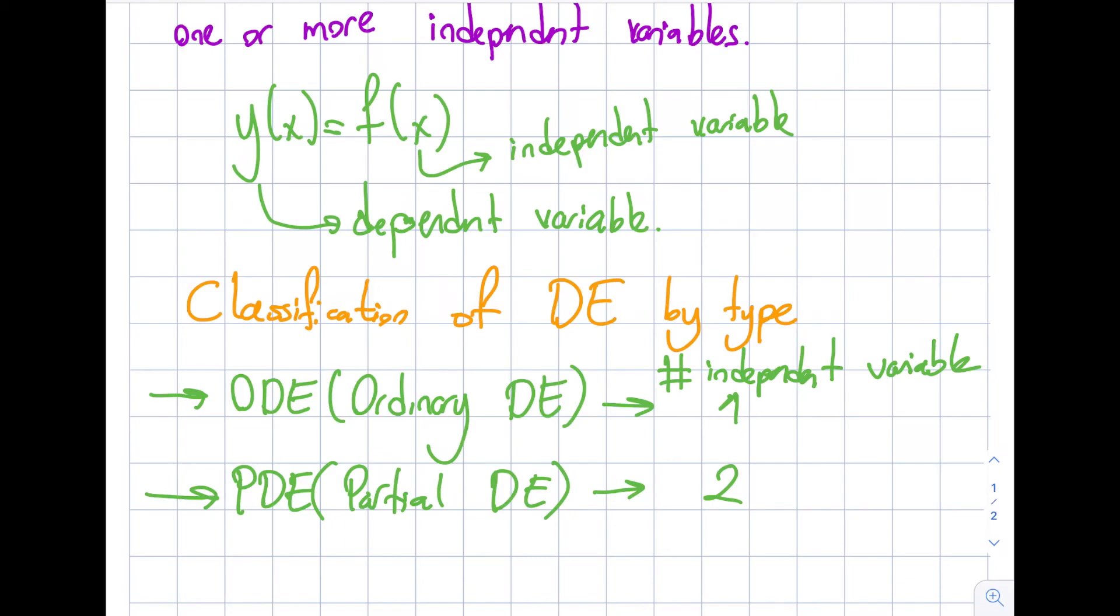If I have two or more independent variables, then I will call this the partial differential equation. In nature, I can have ODEs, I can have PDEs, and during this course, I will solve both of them. One thing I want to highlight before giving examples is I only classify by independent variable. But I don't specify anything with the dependent variable. The dependent variable can be multiple and I still call them ODE.